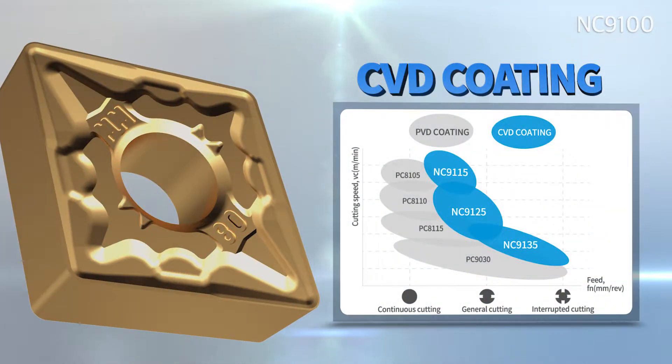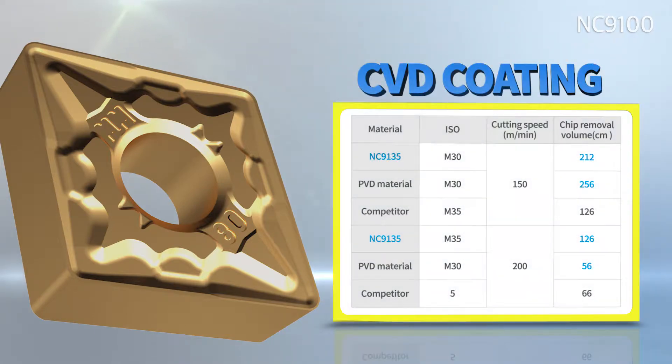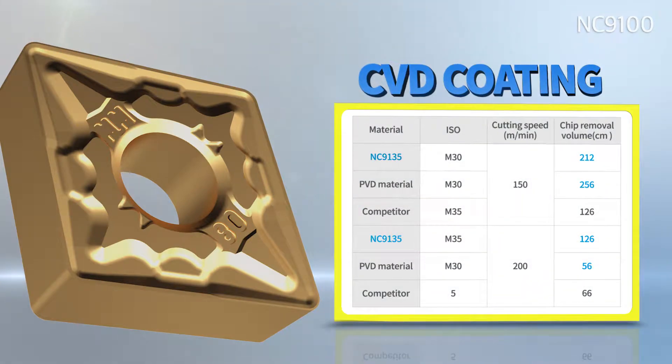Moreover, compared to Corloy's PVD grades and other companies' grades, productivity was increased by increasing the rate of chip removal at high heat generate circumstances.